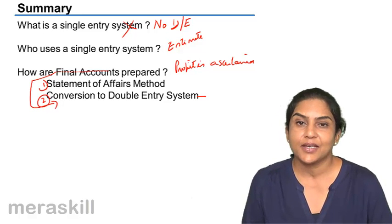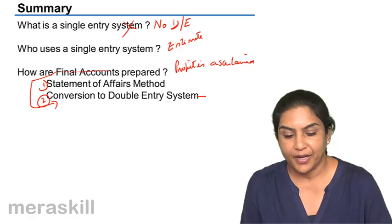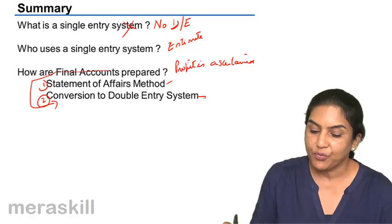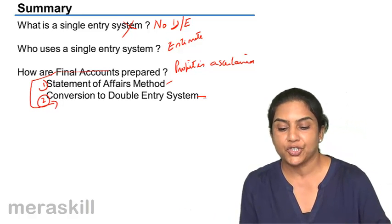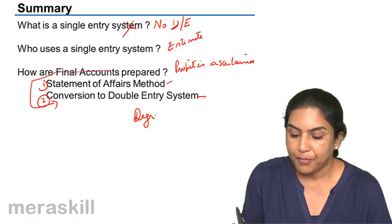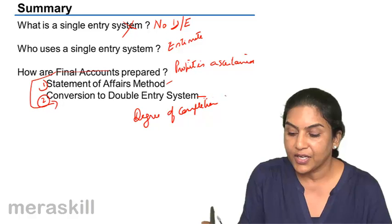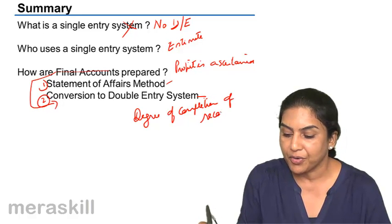The other is conversion from single entry to double entry. Now, when do you prefer a statement of affairs method and when do you prefer conversion to double entry system? It frankly depends upon the degree of completion of the records, degree of completion of accounting records.